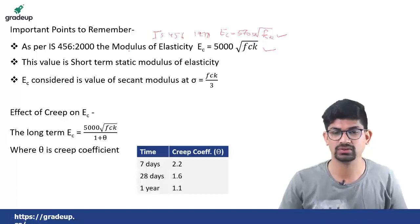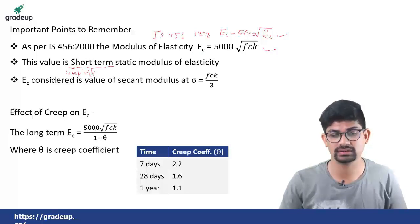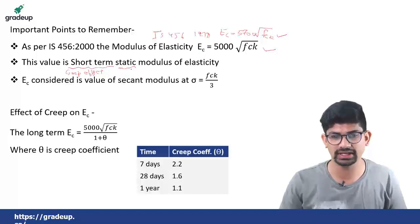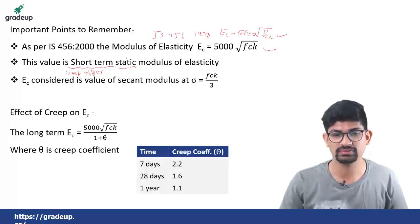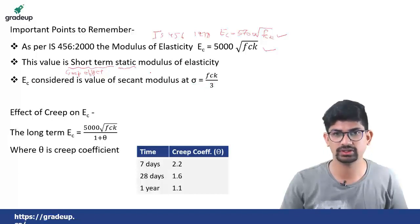This value of elastic modulus EC is the short-term static modulus of elasticity. Short-term here means that the creep effect is not considered. You will have to consider creep separately for long-term loading. Static modulus implies this value is valid only for static loading, not dynamic loading. The EC considered is the value of secant modulus at stress sigma equal to fck divided by 3. These three points are worthwhile to remember.